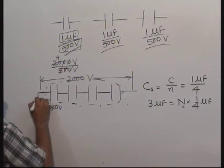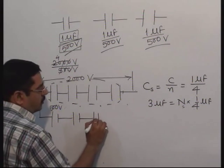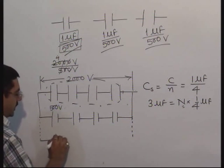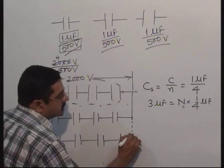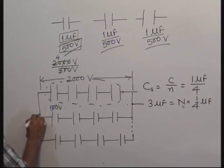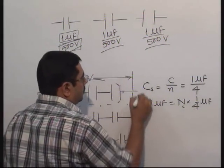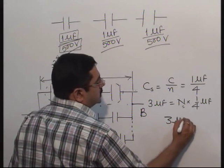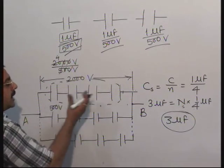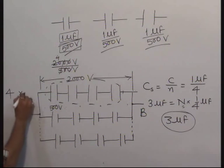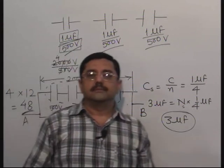So you require 12 such series combinations connected in parallel. Each branch contributes 1/4 microfarad, and adding 12 such branches gives a total capacitance of 3 microfarad between points A and B. How many capacitors are required in total? 4 capacitors in each branch multiplied by 12 branches — the total requirement is 48 capacitors. This is the normal method.